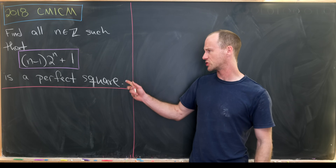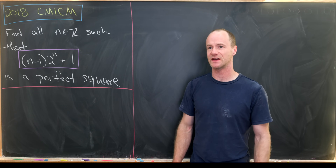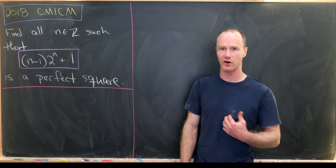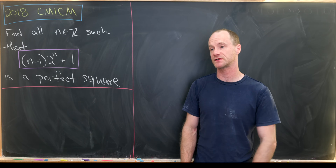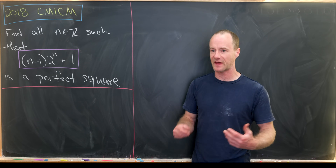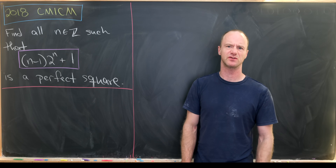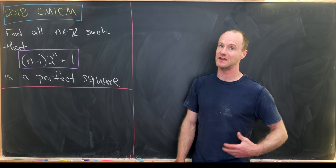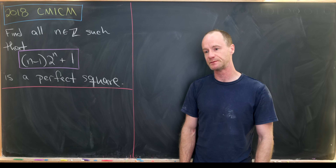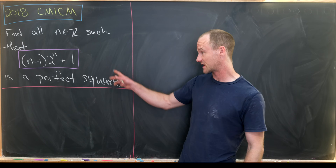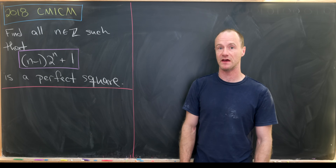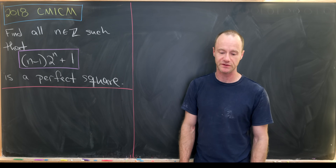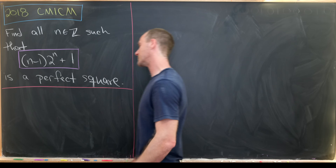Generally when we're trying to do things like this, there's either an obvious infinite family of solutions or there are only a few small solutions. That second case comes about much more commonly, so we'll check some small values of n to see if we can get solutions and then prove there are no solutions after that.